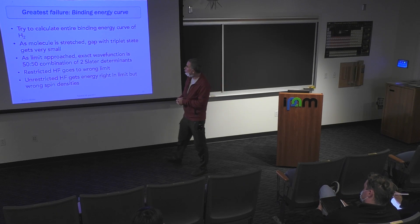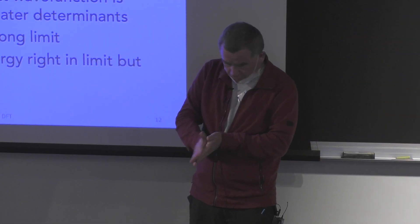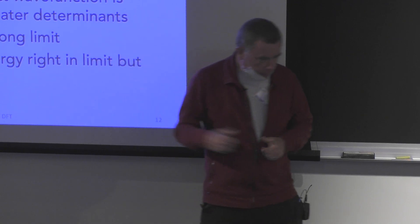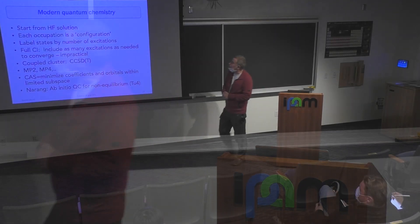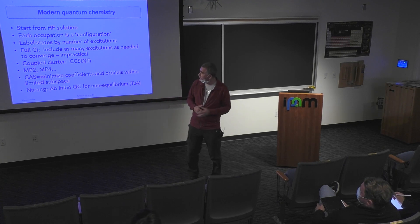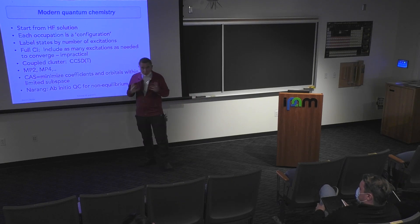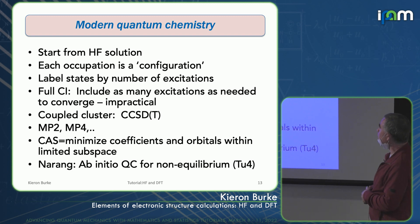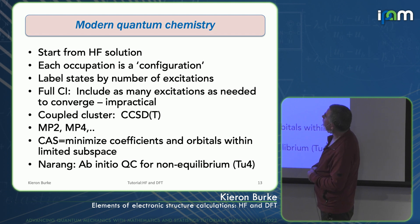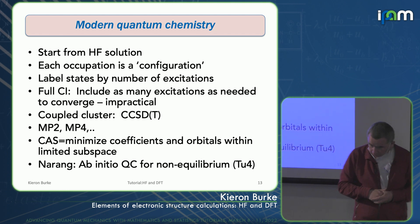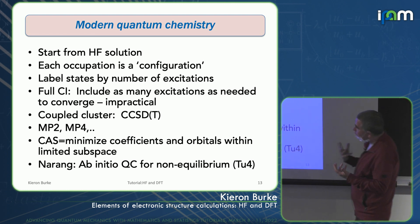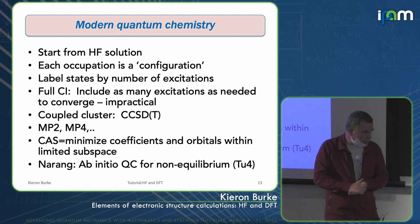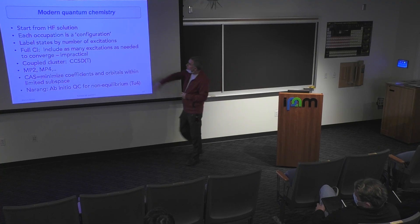For decades, people tried to do resonating valence bond theory, including extra Slater determinants, but it is very hard to get it to work as a black-box tool. In the end, single Slater determinant methods won the race. The reason we still care about Hartree-Fock, having said it's really bad for electronic structure calculations, is that it's the starting point of almost all more sophisticated wave function techniques.